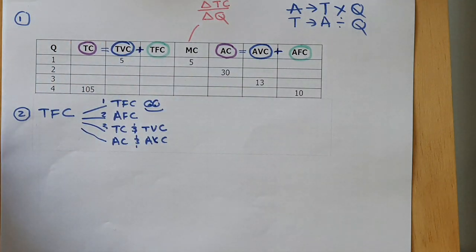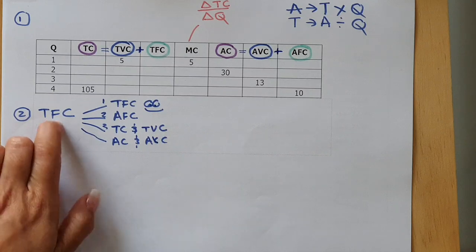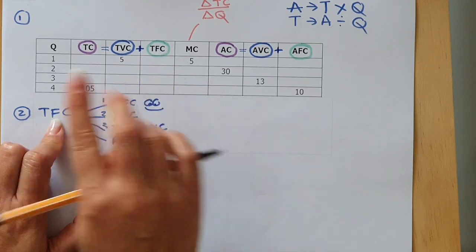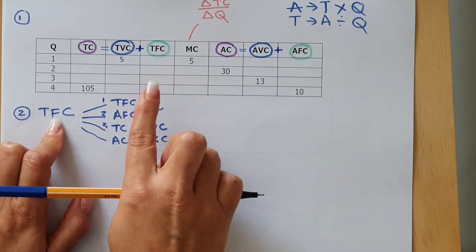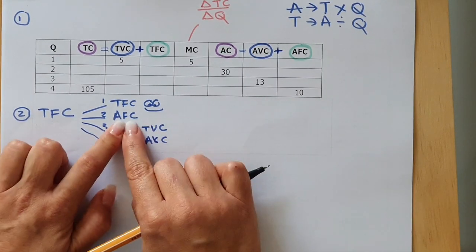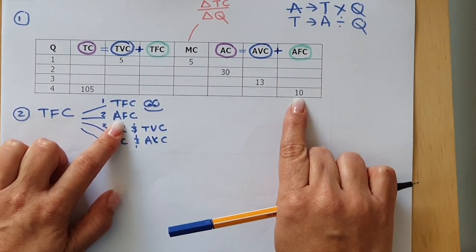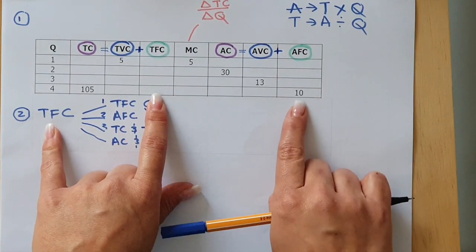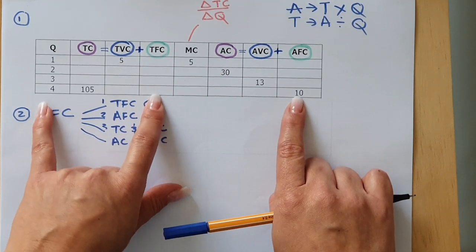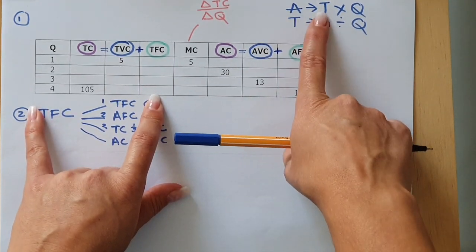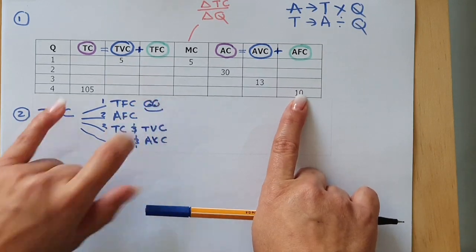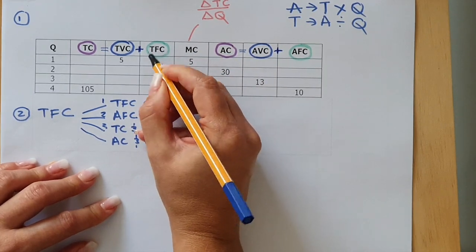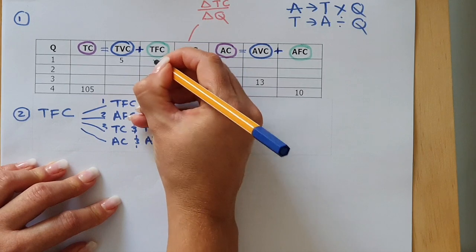So let's apply this. Look for Total Fixed Cost — was anything given in the Total Fixed Cost column? No. Then check Average Fixed Cost — yes, there's a 10. So now you can calculate Total Fixed Cost. You have an average and want to determine a total, so you multiply by quantity: 10 times 4 is 40. And because it's Total Fixed Cost, the whole column is fixed at 40.